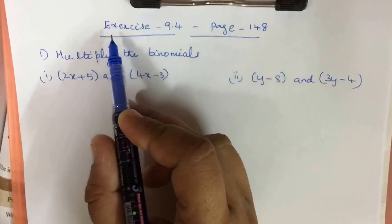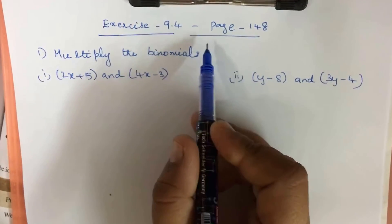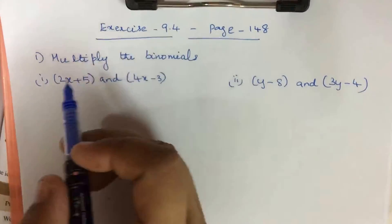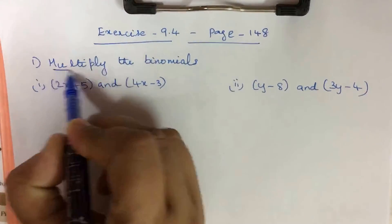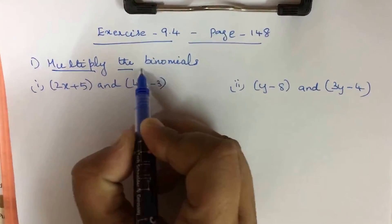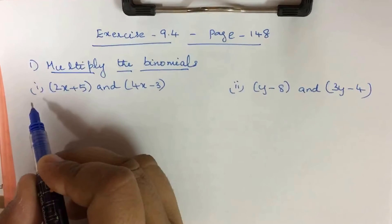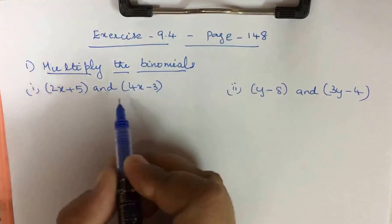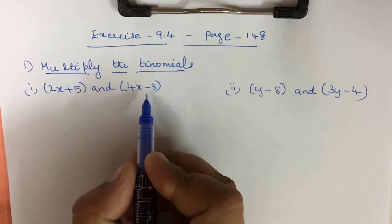Let us learn the topic exercise 9.4 page 148. Question number 1: multiply the binomials 2x plus 5 and 4x minus 3.